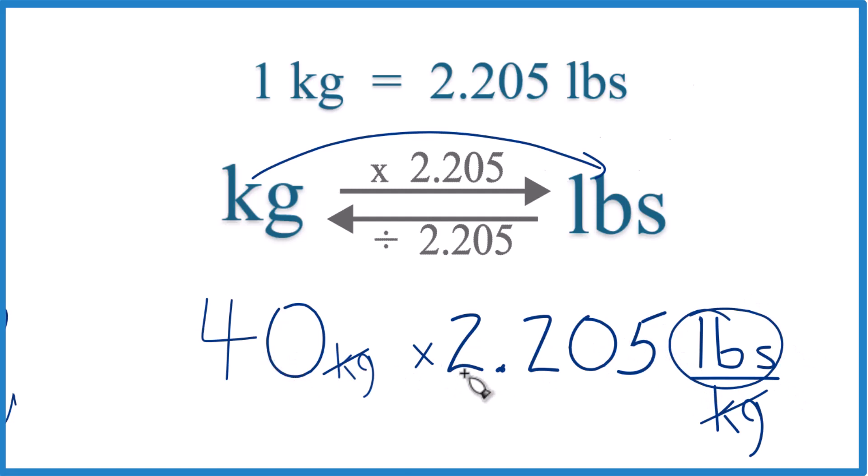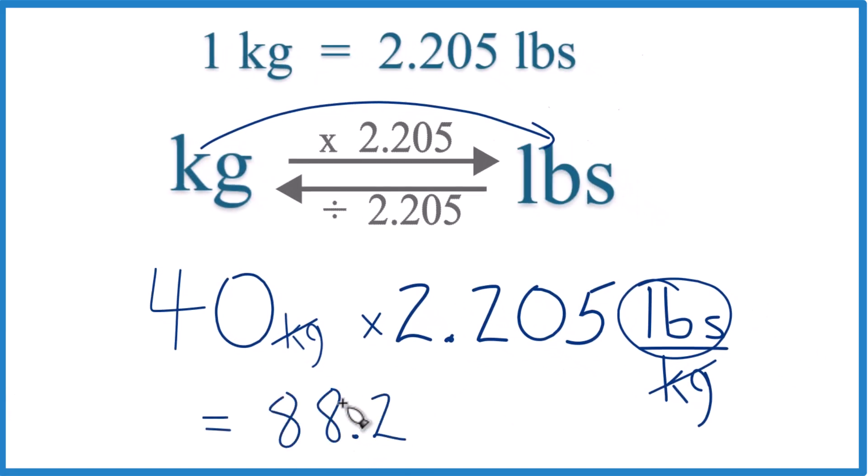So 40 times 2.205 equals 88.2, and the units are pounds. We're converting kilograms to pounds, and we're left with pounds here. So 88.2 pounds.